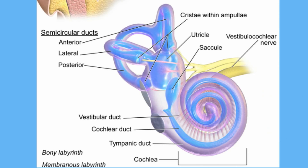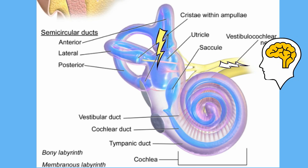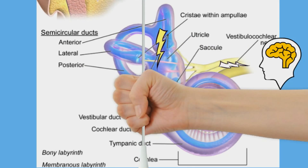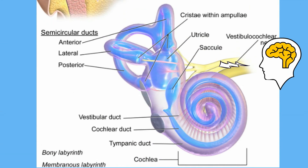This bending produces nerve impulses in the sensory neurons. These impulses travel to your cerebrum. The cerebellum then analyzes the impulses to determine the way your head is moving.